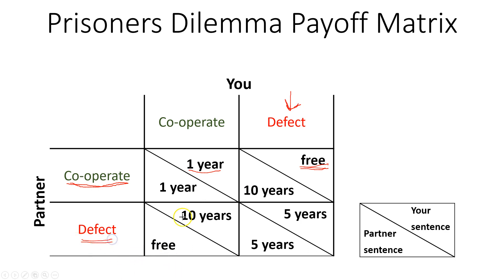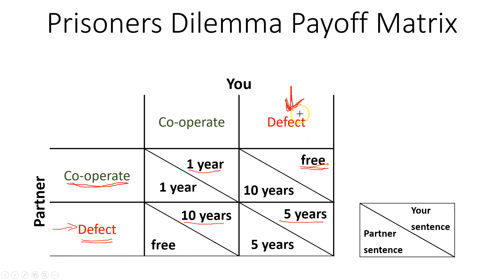Let's see what happens if your partner defects. If he defects and you cooperate, you get 10 years. If he defects and you defect, you get five years. These are two pretty bad options, but defecting is still the better option. Your partner is in exactly the same situation — defecting sets him free if you cooperate, and five years versus ten if you defect. So he will also defect. And this is the equilibrium situation.